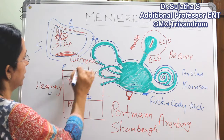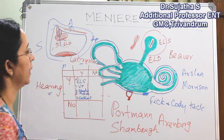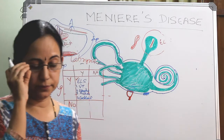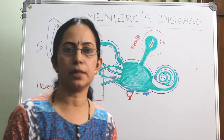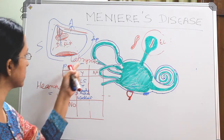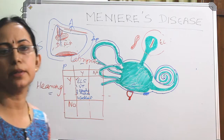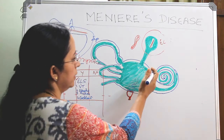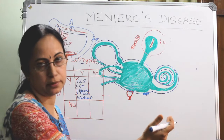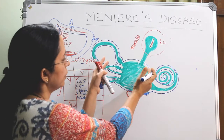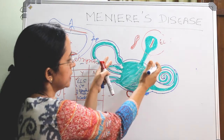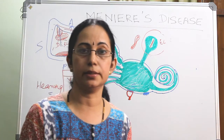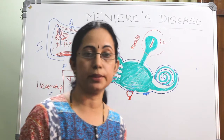Preservation of hearing yes, and labyrinthine function yes. And which surgeries come under this? Hearing yes, labyrinthine function no — that part should be preserved. So this whole labyrinthine part is destroyed. Again there are two methods.